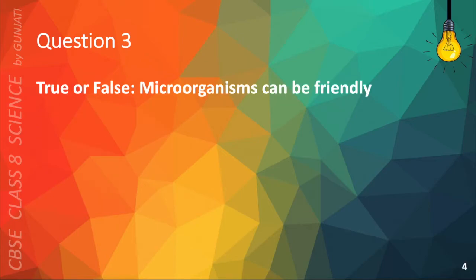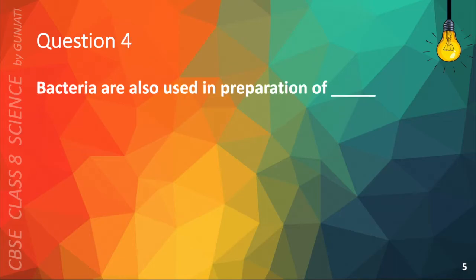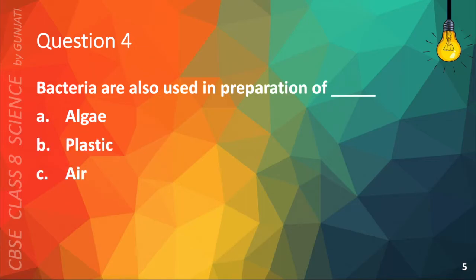Question 3. True or false: microorganisms can be friendly. The correct answer is A. True. Question 4. Bacteria are also used in preparation of A. Algae, B. Plastic, C. Air, or D. Medicines.